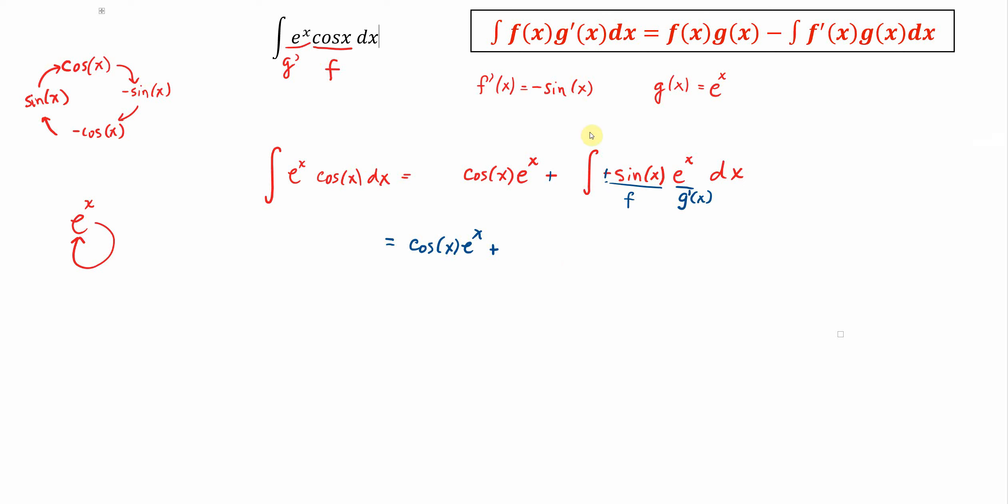The anti-derivative of sine e to the x is equal to f, which is sine of x, times g, which is e to the x. I should make a note here. In this next round, f prime, the derivative of sine, is going to be cosine, and the anti-derivative of e to the x still is always e to the x.